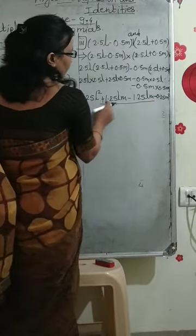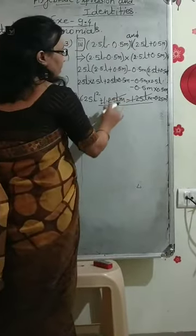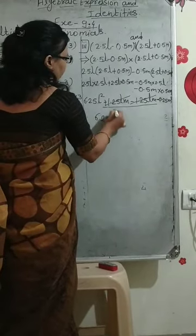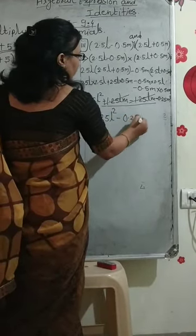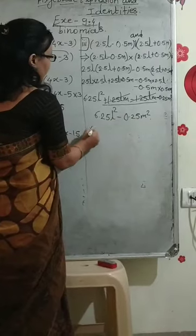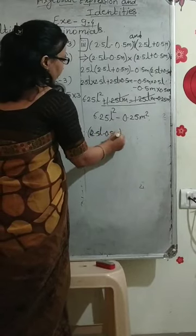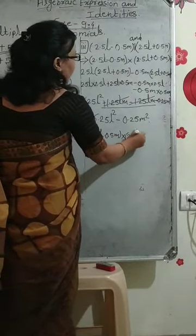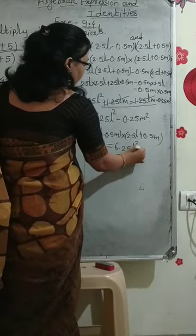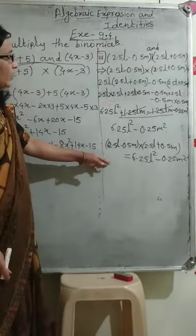Now here there are two like terms: 1.25LM minus 1.25LM. Because minus plus gives minus, both are subtraction so they cancel to give 0. Therefore the answer is: 6.25L² − 0.25M². So (2.5L − 0.5M)(2.5L + 0.5M) = 6.25L² − 0.25M².